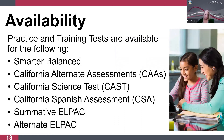Practice and training tests are available for Smarter Balanced Summative Assessments for ELA and Mathematics, the California Alternate Assessments (CAAs) for ELA, Mathematics, and Science, the California Science Test (CAST), the California Spanish Assessment (CSA), the Summative ELPAC — one per domain — and the Alternate ELPAC.